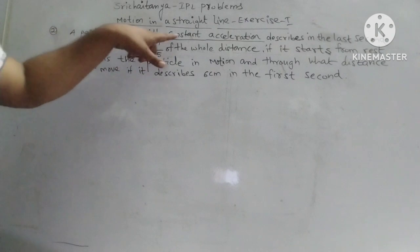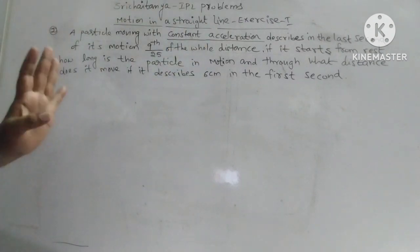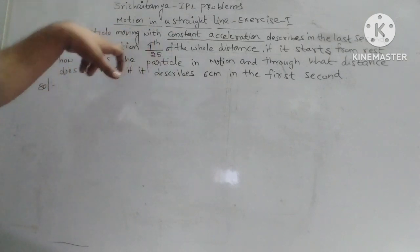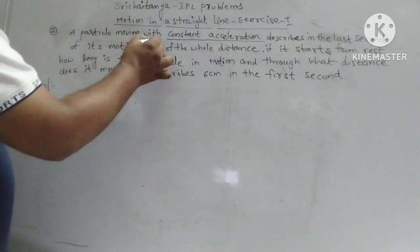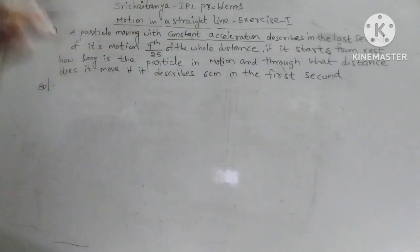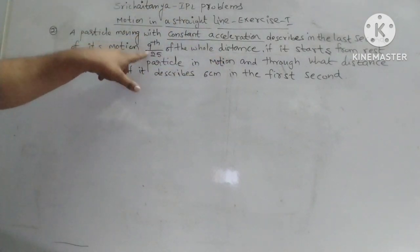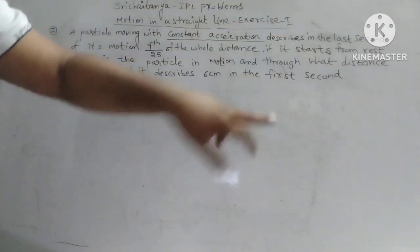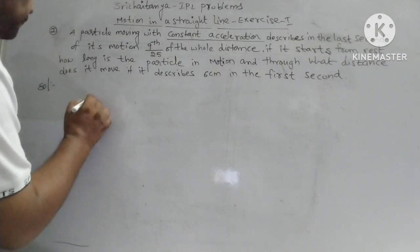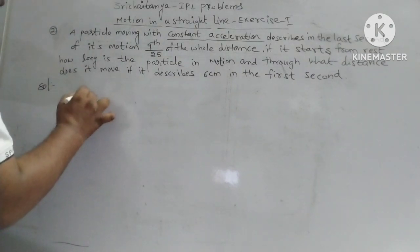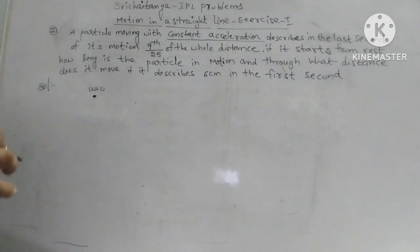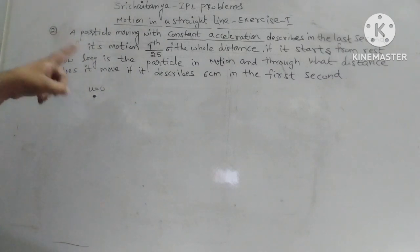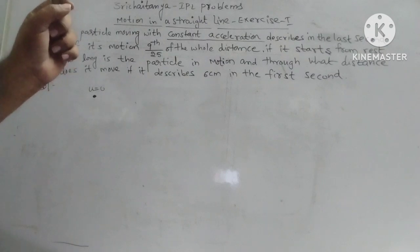The particle is moving with constant acceleration — the acceleration is constant. At the same time, this particle in the last second covers 9/25th of the total distance. When it starts from rest, the initial velocity u is 0. And how long is the particle in motion through what distance does it move if it describes 6 cm in the first second?